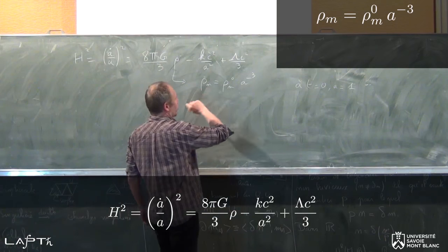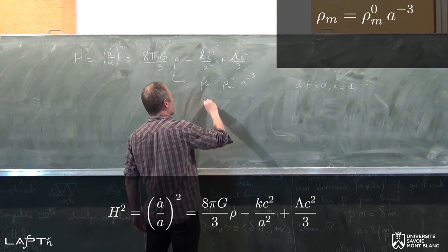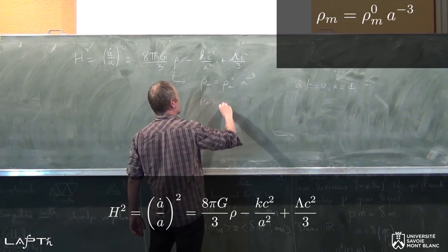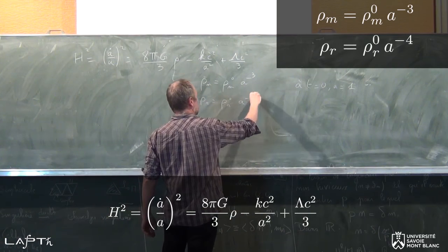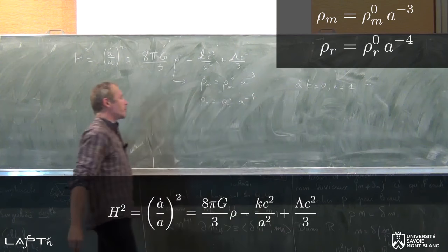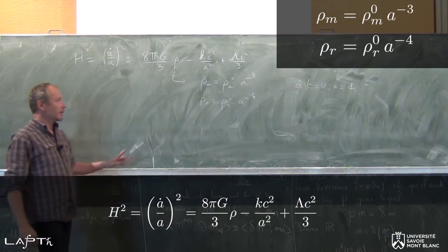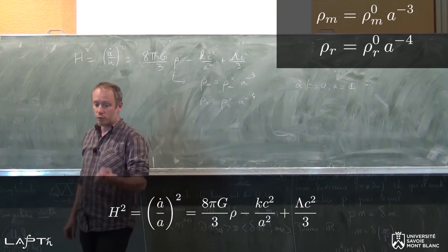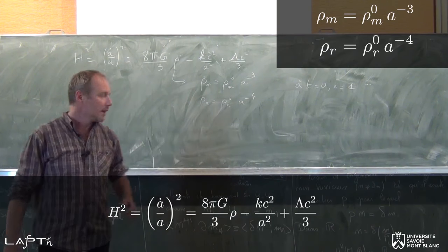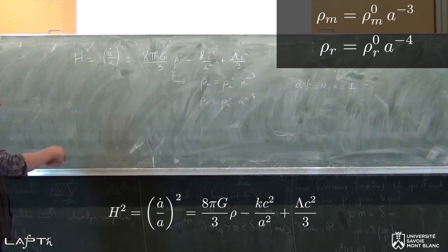Comment évolue la densité de la matière ? Pour le rayonnement, j'avais mentionné et fait une petite démonstration en trouvant que ça évoluait plutôt en A puissance moins 4, le facteur A de différence. Ce facteur vient du terme de décalage vers le rouge que subissent les photons du rayonnement, en plus de l'aspect dilution.